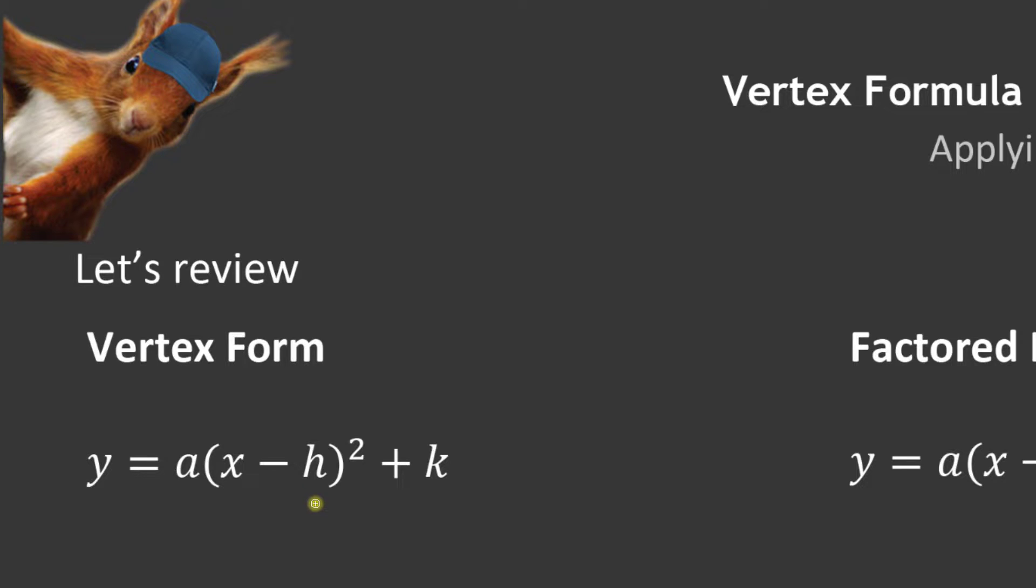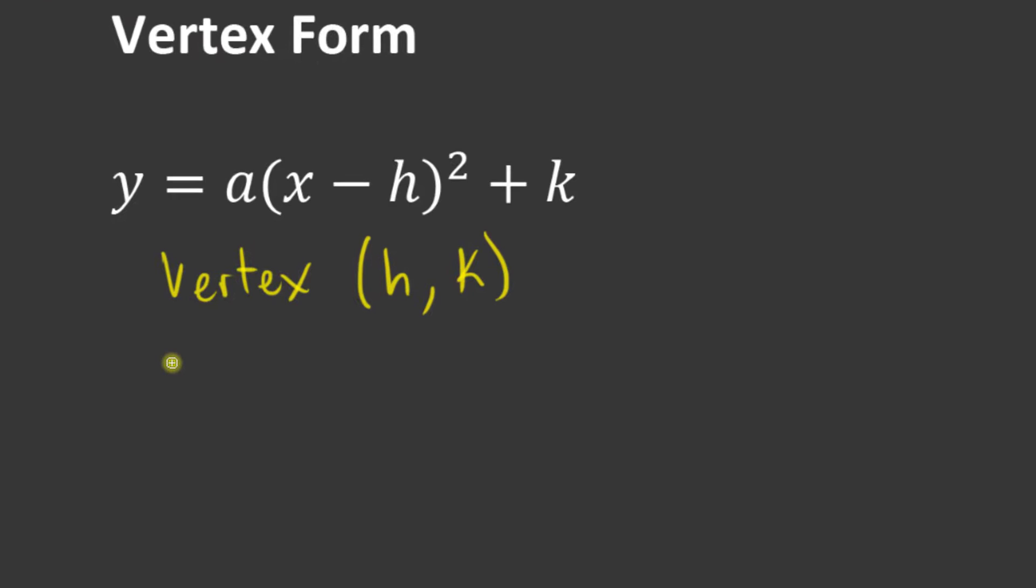Vertex form is called that because it gives us the vertex. The vertex is made up of the h value and the k value directly from the equation. We do have to be a little bit cautious because the h inside the equation is listed as x minus h, so we have to take the opposite of that negative. The a is still there, we call that the amplitude, and that tells us the concavity.